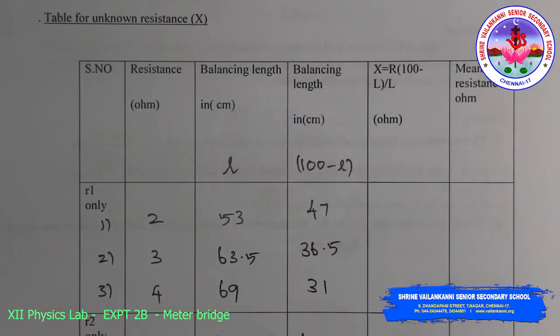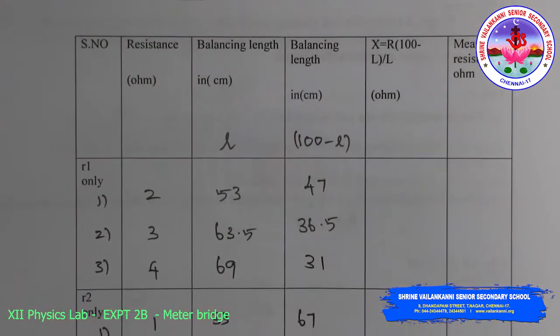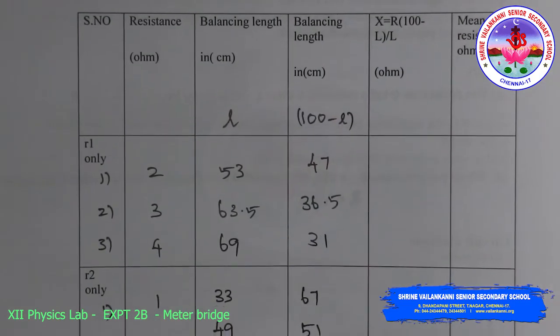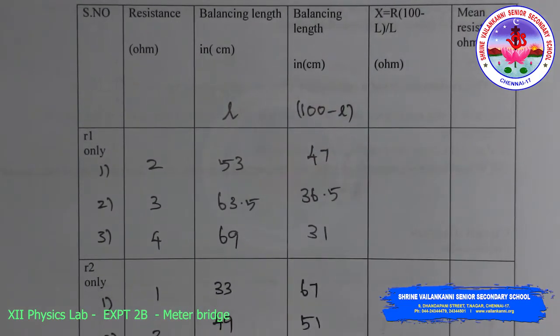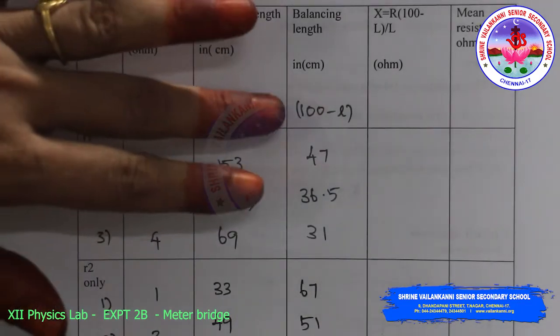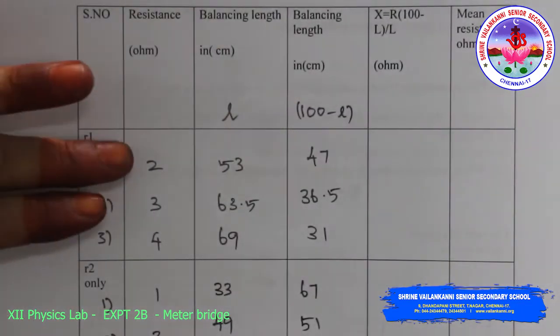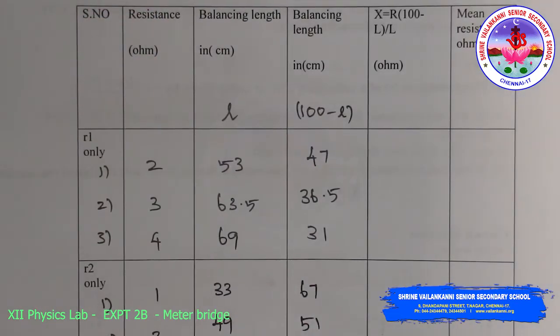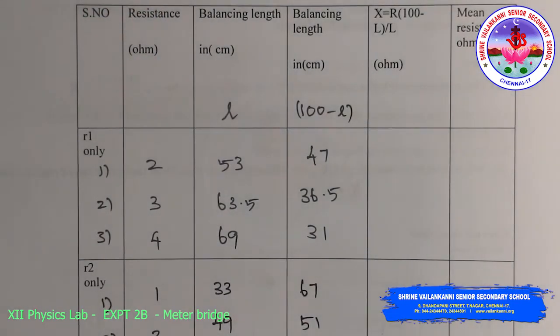Table for unknown resistance X. We have taken various values of resistance: 2, 3, 4 ohms like that. We got the balancing length and 100 minus L we have to do it. For example, 2 ohms, 53 is the balancing length. So 100 minus L, 100 minus 53, 47 we got it.